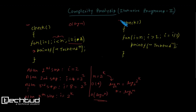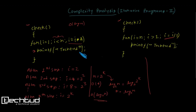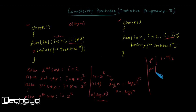Now let's discuss the second check function. Here the value of i is getting halved after every iteration. We can analyze it similarly: after the first step i becomes n/2, after the second step i becomes n/4, which is n/2².